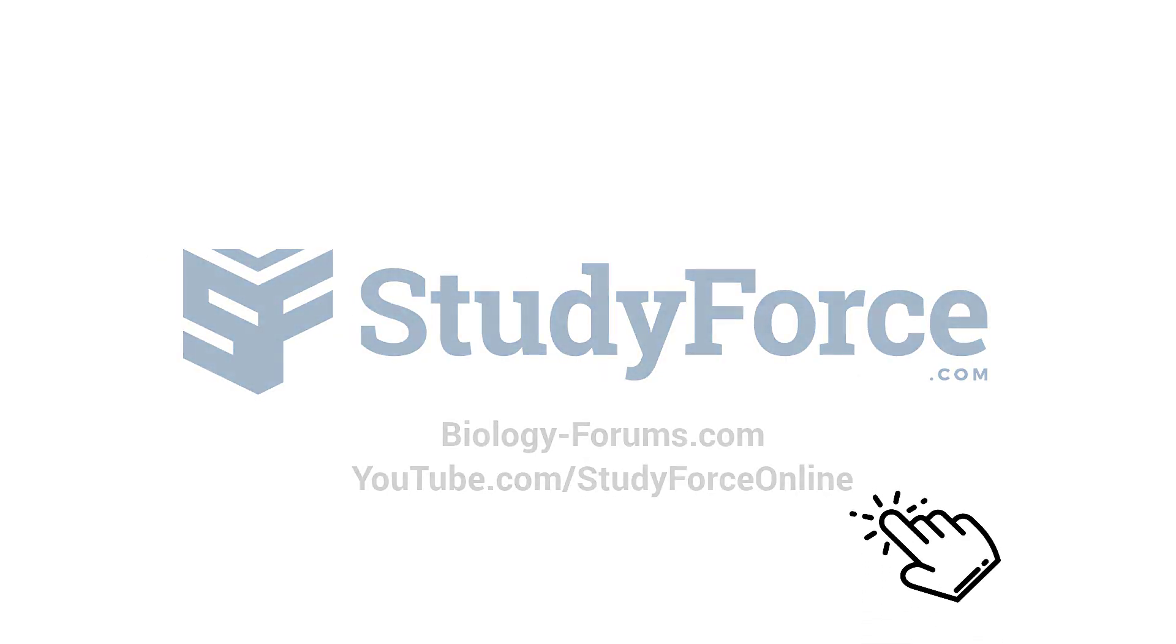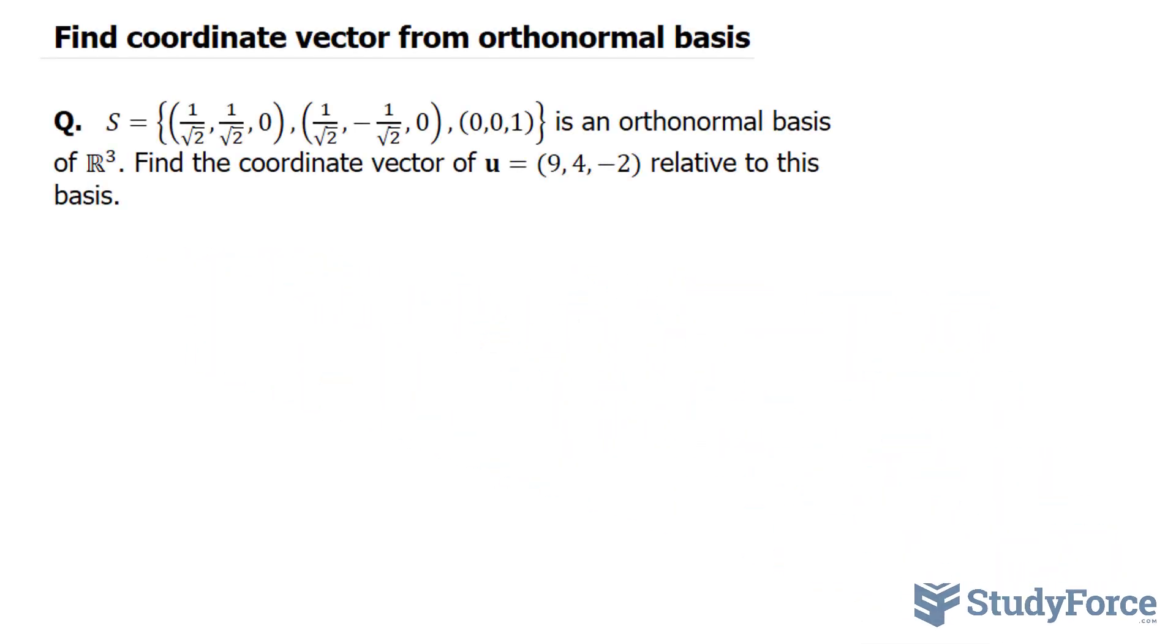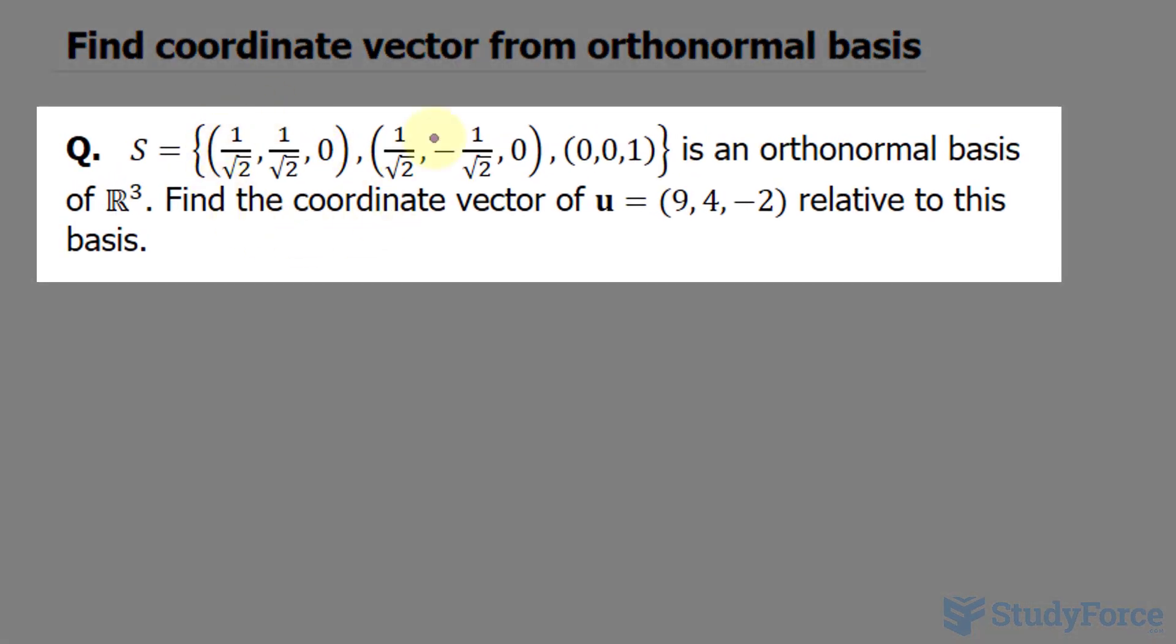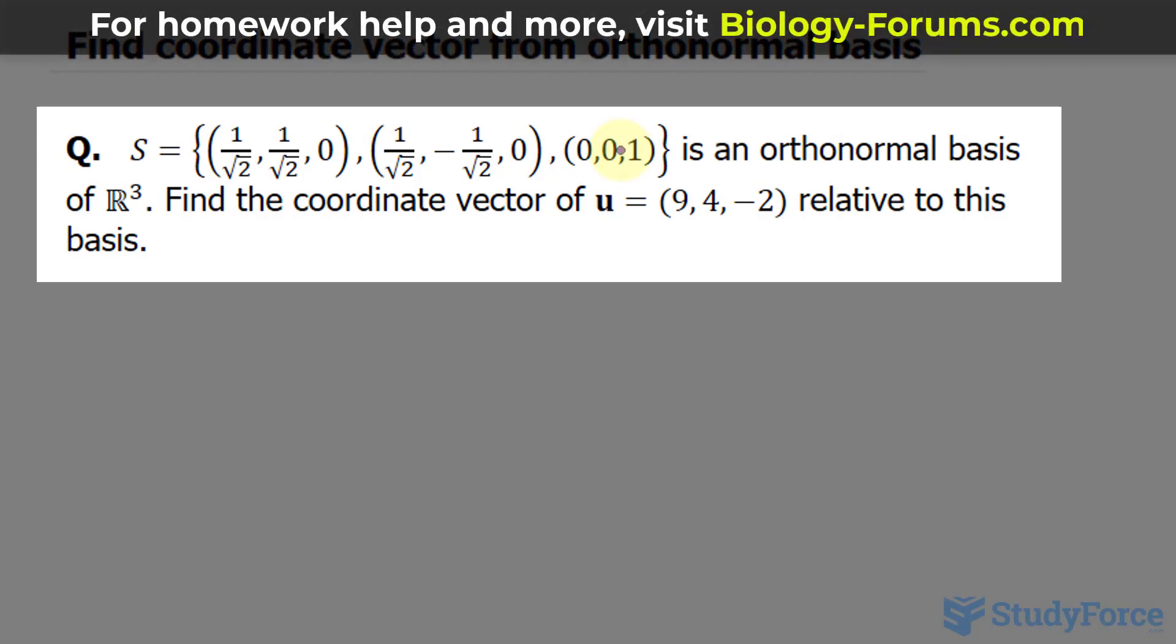In this lesson, I'll show you how to find the coordinate vector from an orthonormal basis. The question reads: the set S, which includes these three vectors, is an orthonormal basis of R³. Find the coordinate vector u relative to this basis.